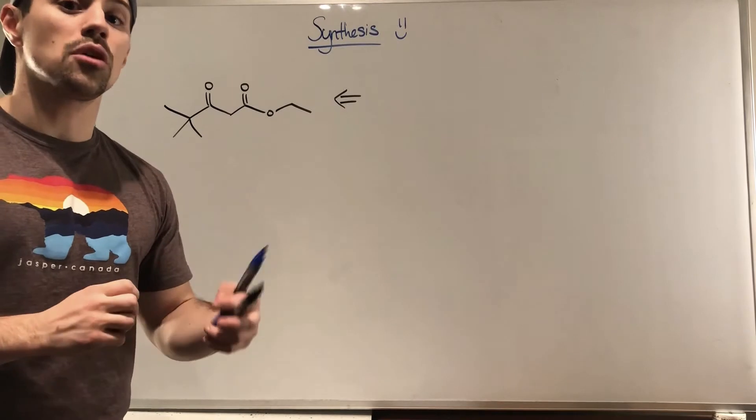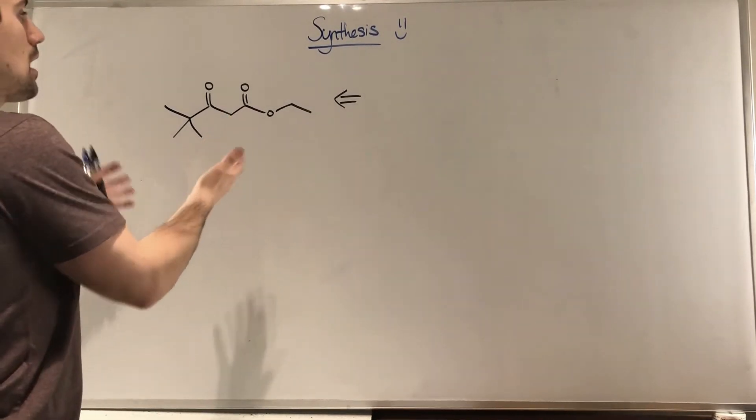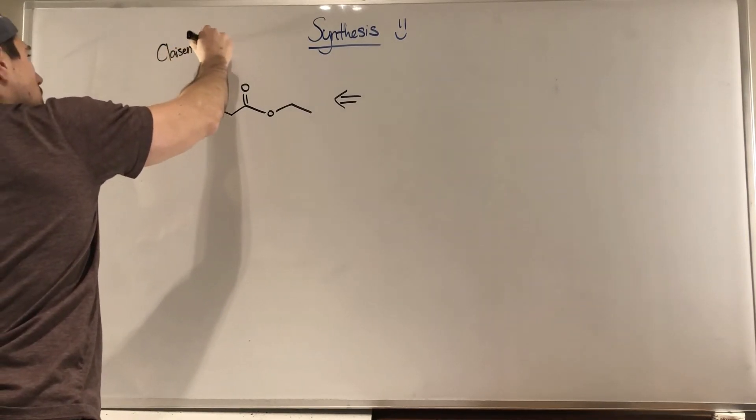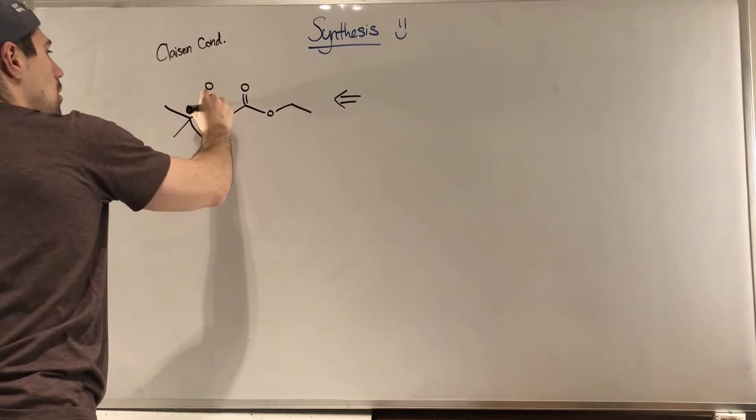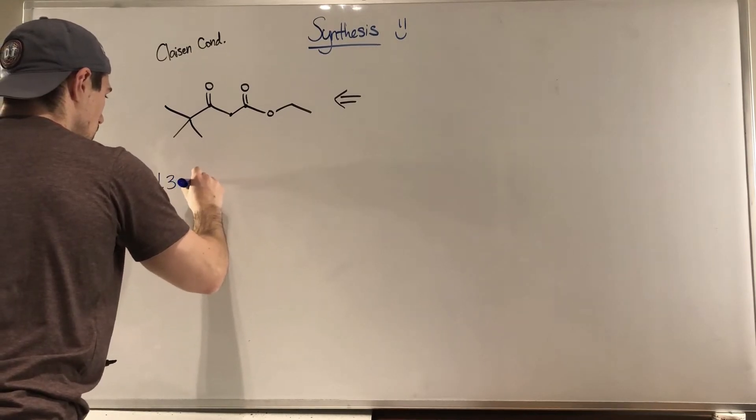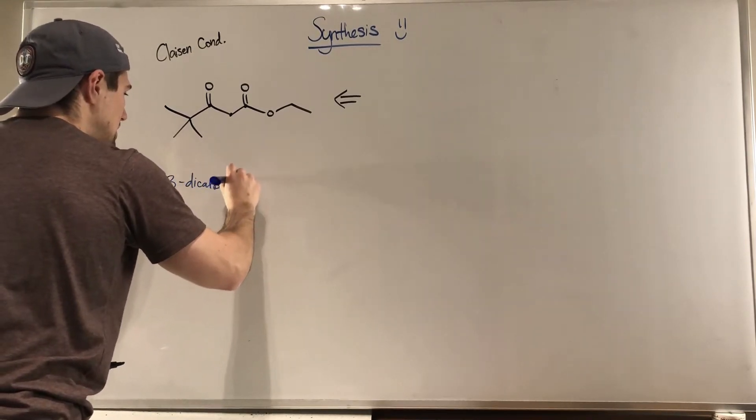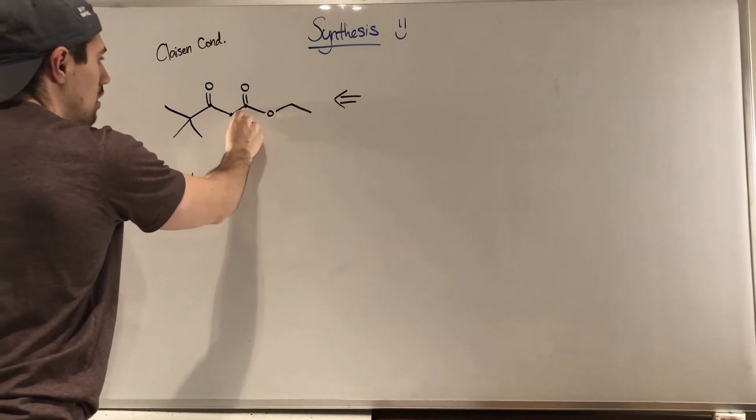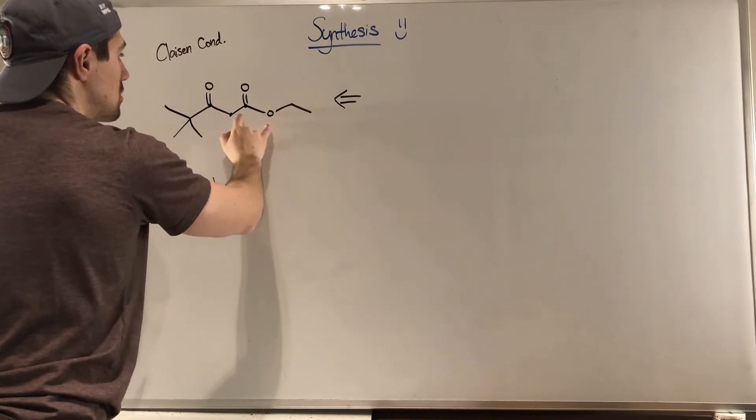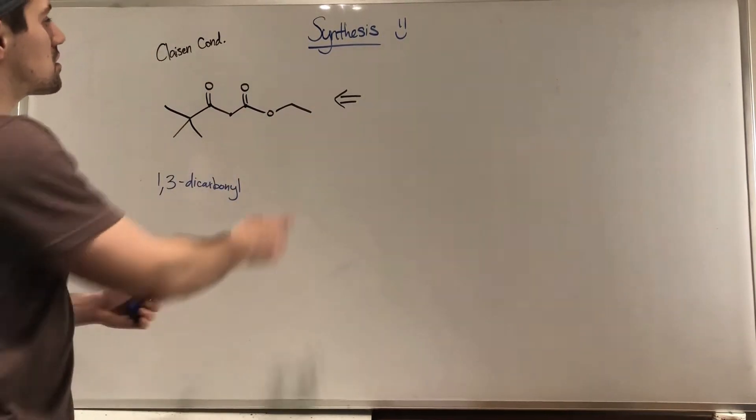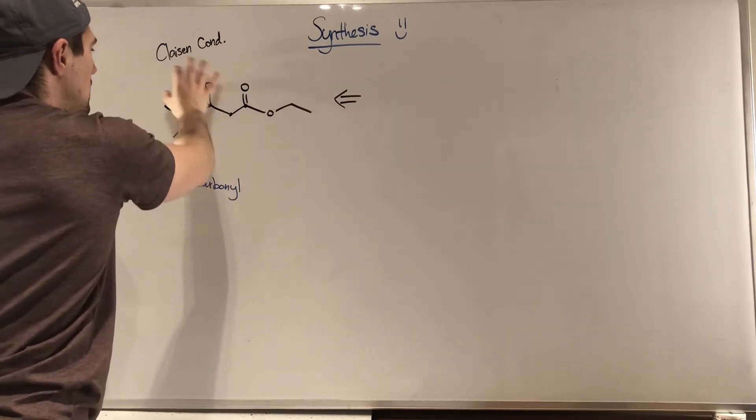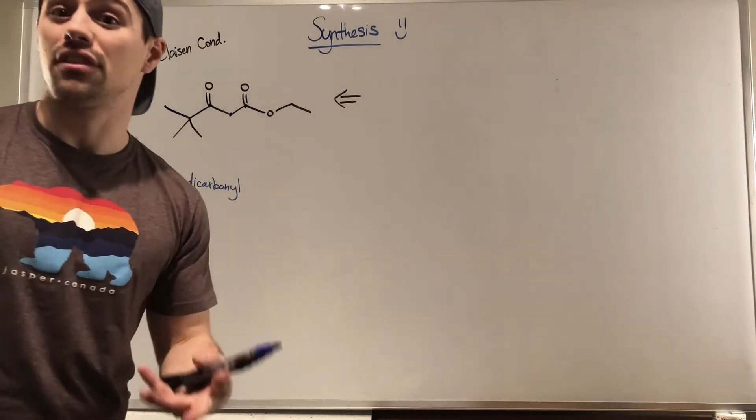So when we have a product like this, I hope this is screaming very straightforward Claisen condensation because we see a 1,3-dicarbonyl and then we see on one of the sections of the branch side of the carbonyl, we see this is a full-blown ester, right? So this is clearly the ester that did the attacking and then this was formerly an ester but has since lost its ether character.